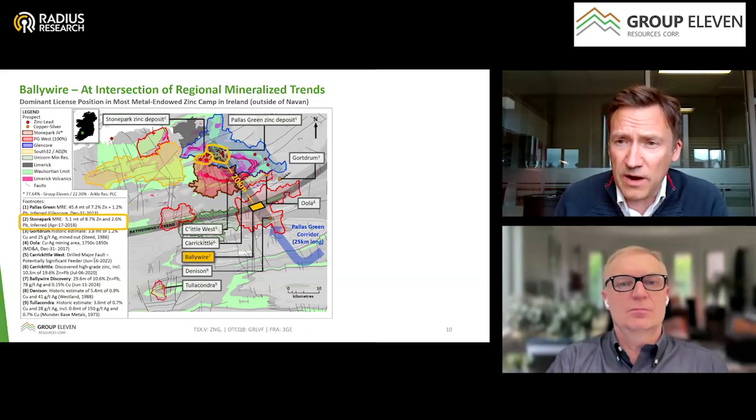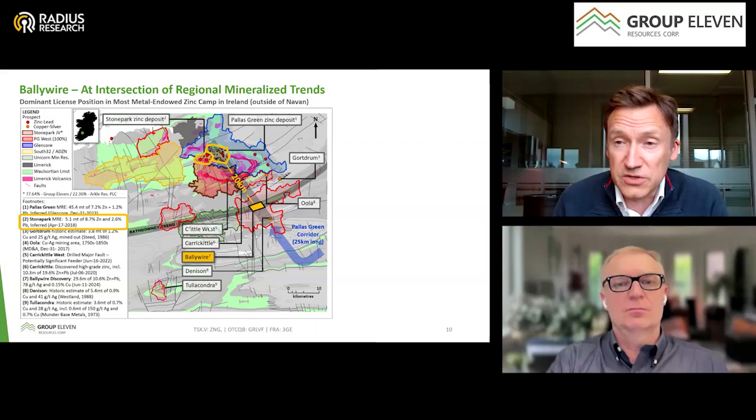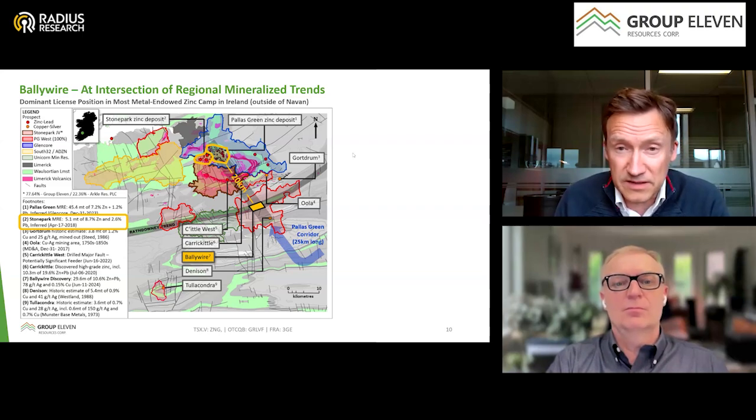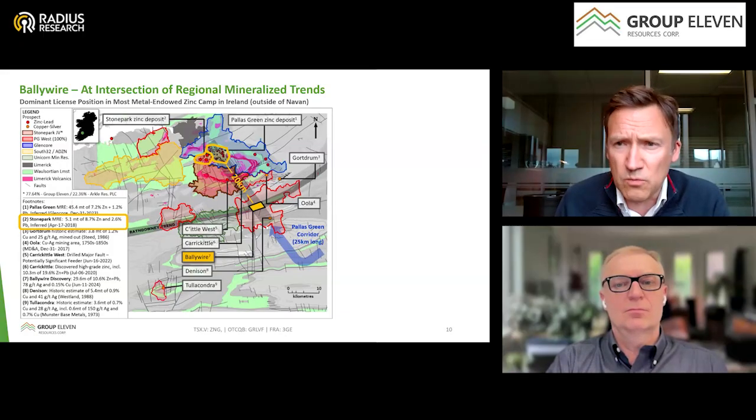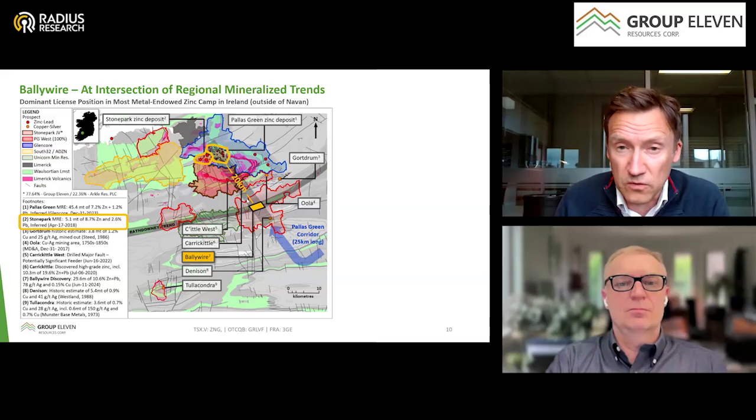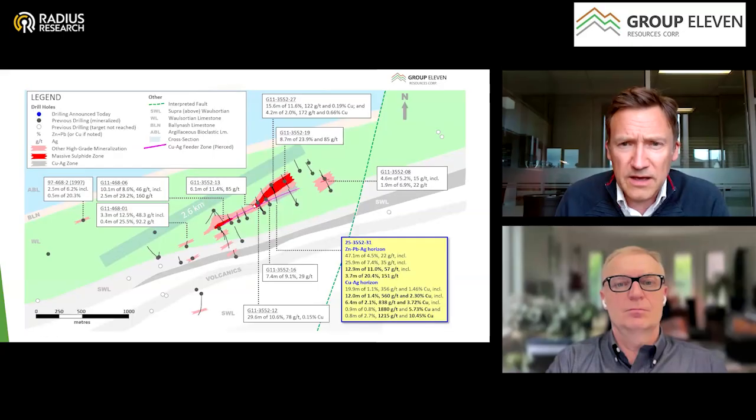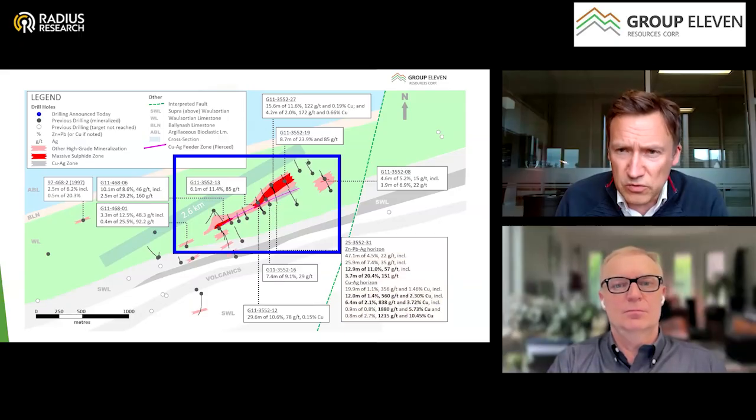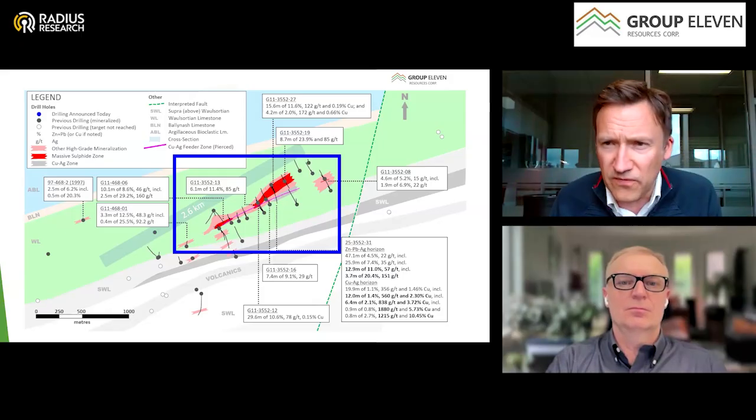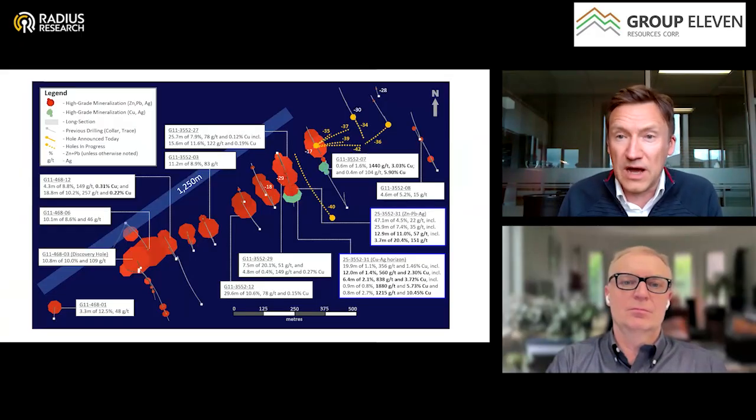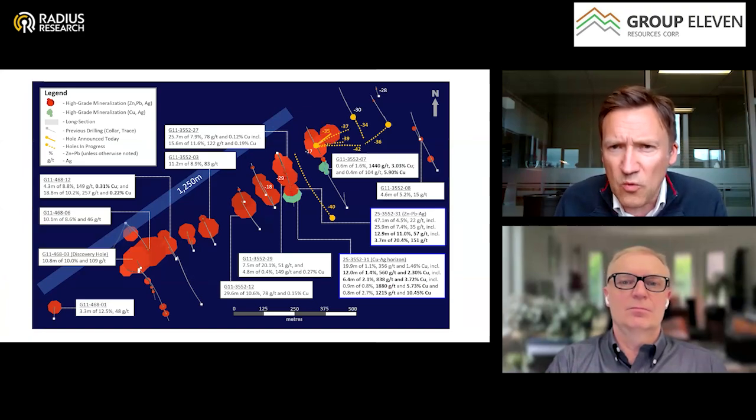Ballywire is sitting on the intersection of two mineralizing trends, which makes it extra prospective. That's why our discovery is there—at the intersection of the famous Rathdowney trend which hosts Lisheen and Galmoy, and also this more northwesterly trend, the Pallas Green corridor. I'm going to dive into this yellow box and show you the state of play of the Ballywire discovery to date. I'm going to zoom in on the 1.5 kilometers that has been drilled in higher density.